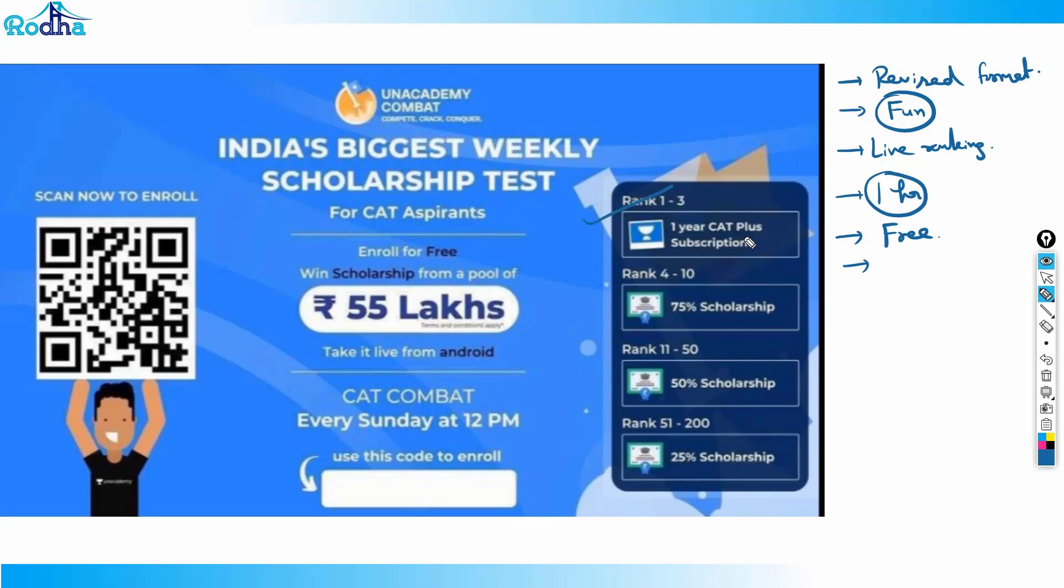So rank 1, 2, 3 get 1 year subscription I think around 20,000 or 75% scholarship or 50% or such great prizes are on offer. So get it live from your mobile app. You just put the link here. This invite code you can put here - Ravi Rodha. It will ask you for invite code. It is absolutely free of cost. So it will ask you for invite code, put Ravi Rodha, and the link I'll put in description. Just enroll from there. And do give this every Sunday at 12 p.m. It's on every Sunday. So every Sunday give this at 12 p.m. Thank you.